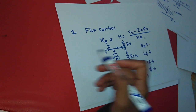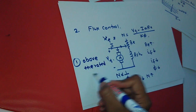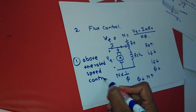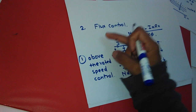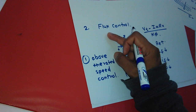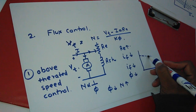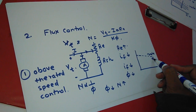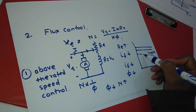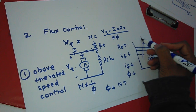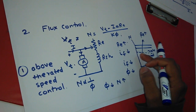The advantage is that above the rated speed, speed control is possible, and armature power loss is less — only losses take place in the field winding. So this is used for a wide range where speed is required to change above the rated speed. For the characteristic, the rated speed characteristic is shown, and we can get more speed beyond the rated speed by increasing the resistance.